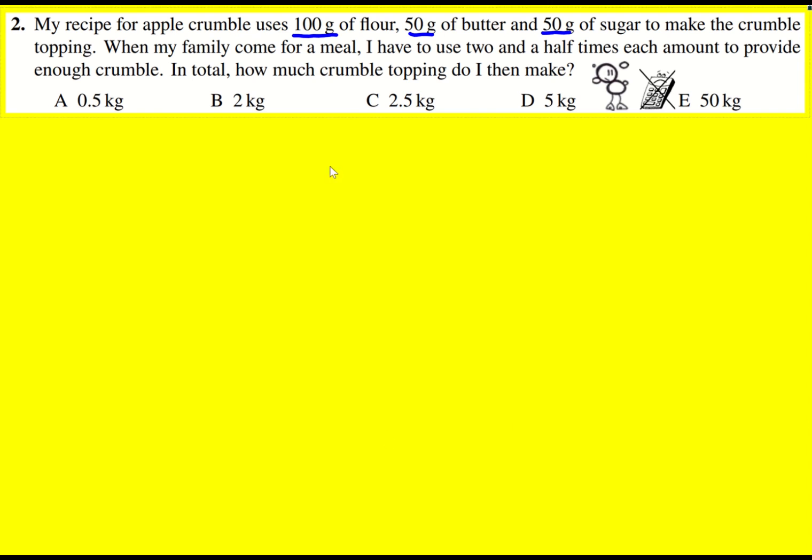Well you could find two and a half times each individual one but we're just interested in the overall, so it makes sense actually to add them together. So that's how much grams we would need to make the normal recipe, 200 grams, and now we just need to do two and a half times that.